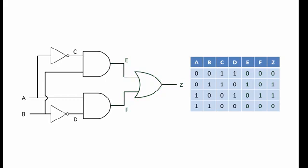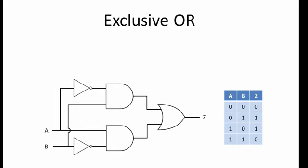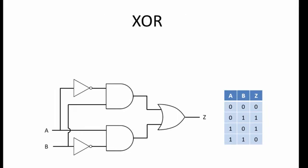This is actually a very useful combination of logic gates. It's sometimes referred to as the exclusive OR, or XOR for short. If you examine the truth table, you can see that it's almost the same as an OR gate. When one or the other input is a 1, the output is a 1. When both inputs are 1, the output is a 0. So quite literally, if one or the other input is a 1, the output will be a 1, exclusively. This combination of gates even has its own symbol.